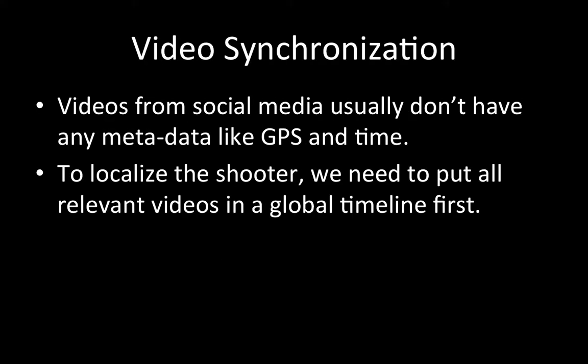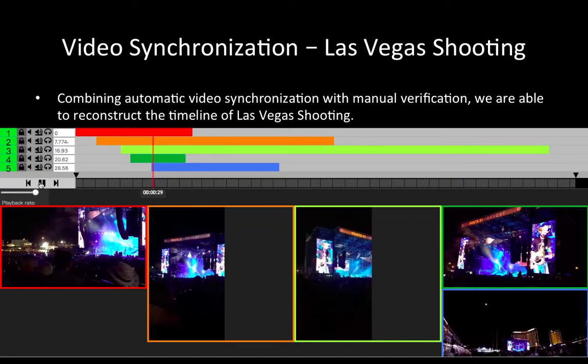Videos from social media usually don't have any metadata like GPS and time. To localize the shooter, we need to put all relevant videos in a global timeline first. By combining automatic video synchronization with manual verification, we are able to reconstruct the timeline of the Las Vegas shooting using a few social media videos.